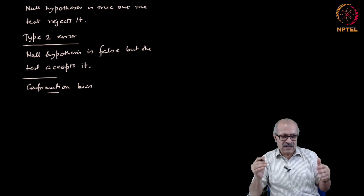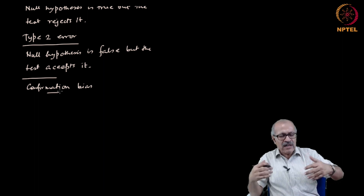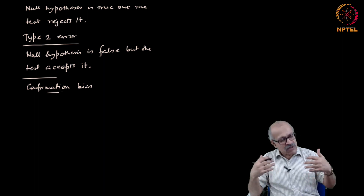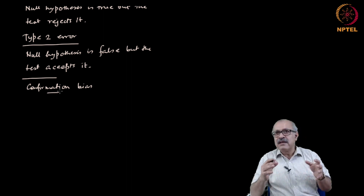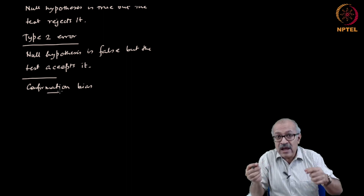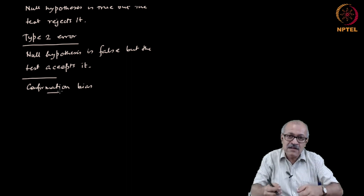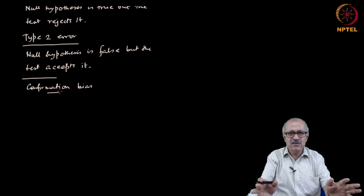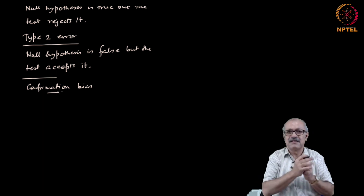Now let us try to understand how one has to plan an experiment to avoid any subjective judgment or possibility of confirmation bias on the part of the experimenter. A scientist has to be aware that he or she themselves may have a confirmation bias, and must set up the experiment in such a way that even their own belief cannot interfere with the results.